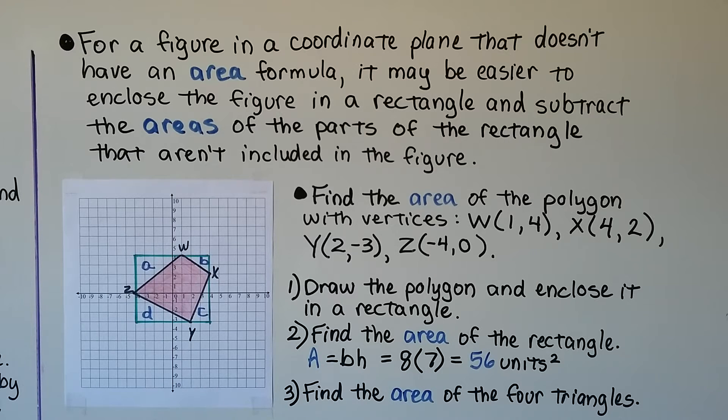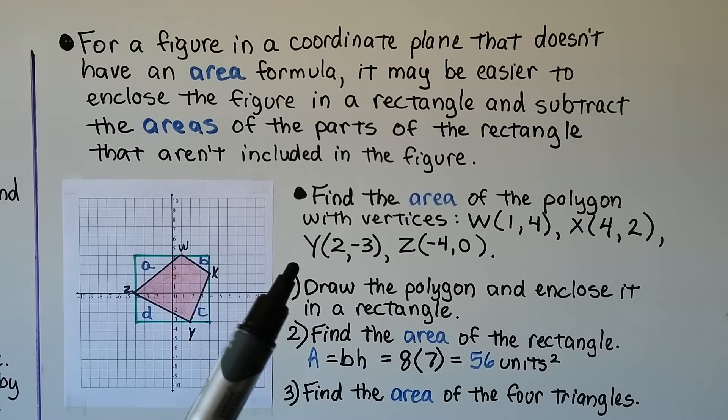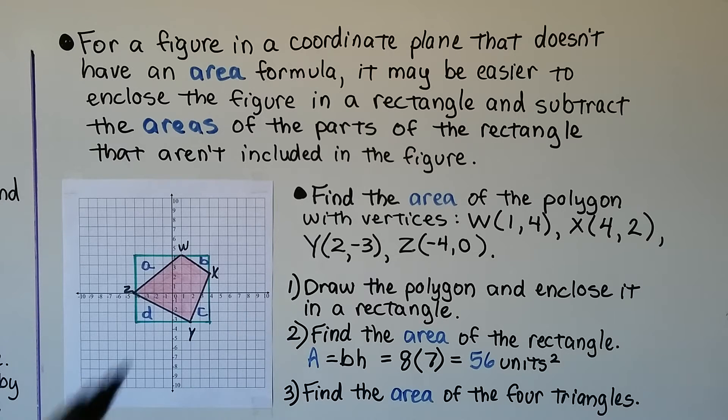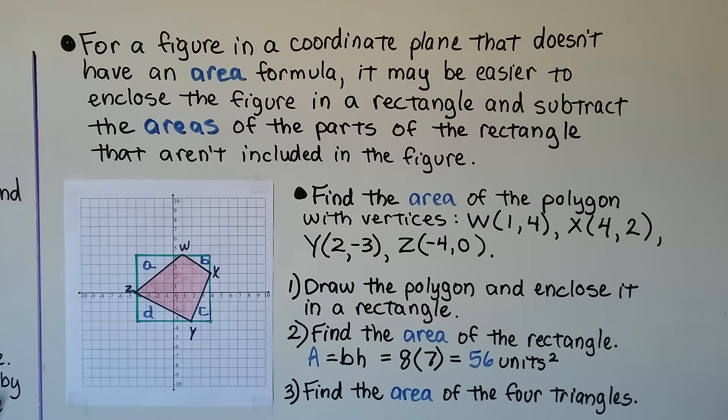For a figure in a coordinate plane that doesn't have an area formula, it may be easier to enclose the figure in a rectangle and subtract the areas of the parts of the rectangle that aren't included in the figure. We need to find the area of the polygon with vertices w, x, y, z. We plot these points, connect the vertices, and these are not parallel. So we have a quadrilateral, but there's not really a formula we can use for this. So we draw the polygon and enclose it in a rectangle. I put it in this green rectangle. We find the area of the rectangle. Area equals base times height. We've got 8 units going across for the base, and we've got 7 going up. 8 times 7 is 56 units squared.